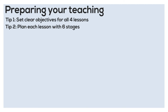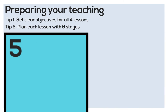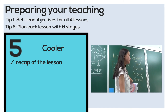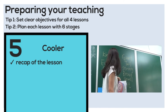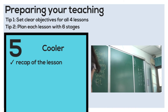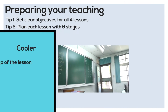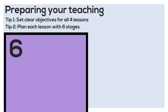Back to the six stages: the fifth stage is called the cooler, which means a simple conclusion or recap of the lesson in order to check understanding. The final stage is optional — if you want to give your students homework or assessments, that should always come last.